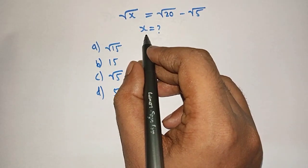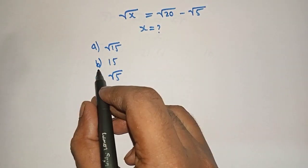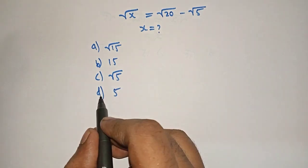Therefore, we have to find the value of x. x equals what? Option a: root 15, option b: 15, option c: root 5, option d: 5.